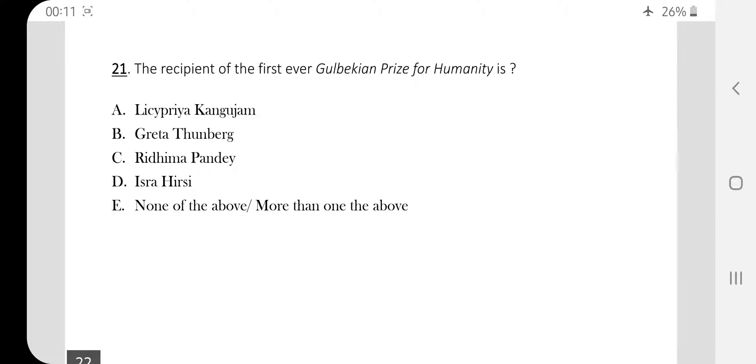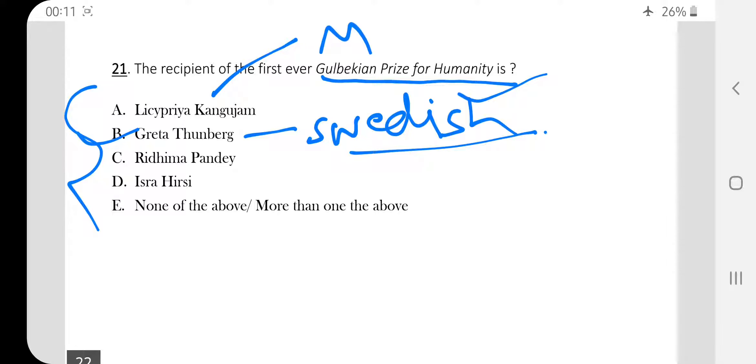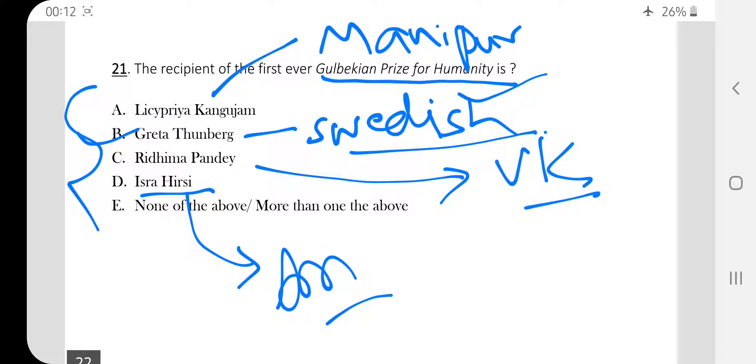Question number twenty one. The recipient of the first ever Gulbekian prize for humanity. This is a new prize that has been created. This is given to people working in the field of climate change. The first award has been given to Greta Thunberg. Greta Thunberg is a Swedish climate activist, that is, she is from Sweden. In fact, there are four young climate activists. Licypriya Kangujam belongs to Manipur. Then there is Ridhima Pandey who belongs to Uttarakhand. And Isra Hirsi is American. So these four are important. Remember these names.